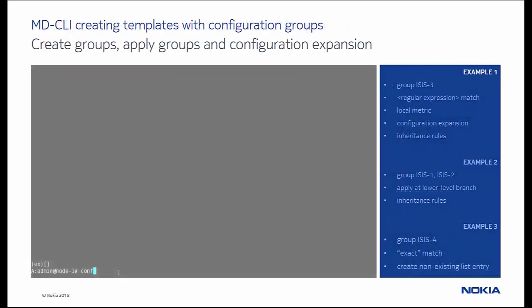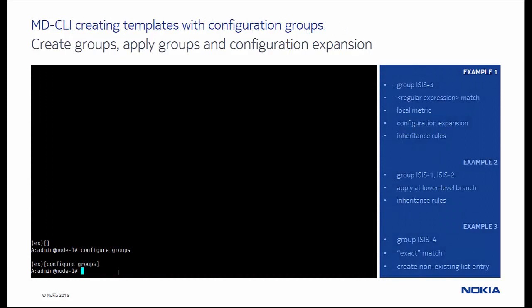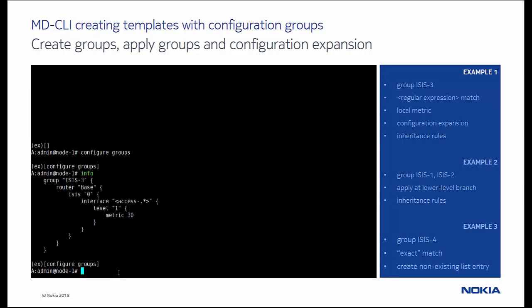In the first example, we navigate to the configuration group branch, where we created a group called isis3. This template chooses a regular expression and sets metric 30 for all interfaces starting with the name access-. Notice that a regular expression must be entered as a string that begins and ends with an angle bracket.